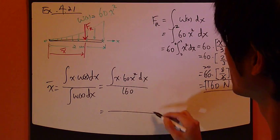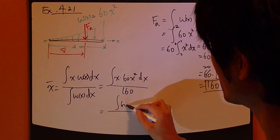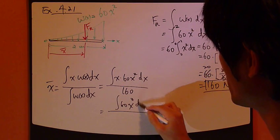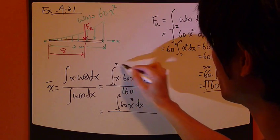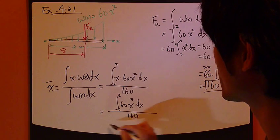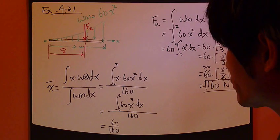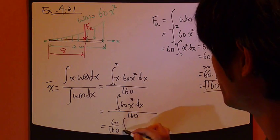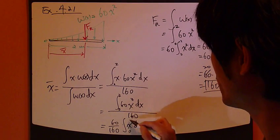So for the numerator, just combine terms. So 60x third dx, again, integrated from 0 to 2, 0 to 2. 160. Take constants out. So 60 over 160. So what's left? x cubed dx from 0 to 2.